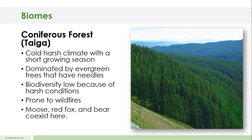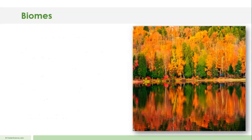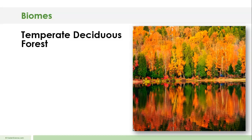Animals you'd see in the taiga include moose, red fox, and bear — they coexist in this area, though coexisting doesn't mean they all get along; like most living things, they compete for food, water, and shelter. Some maps show New Hampshire or parts of it as being in the taiga, but it probably fits better into a different biome category — the temperate deciduous forest — which we'll cover in the next video.